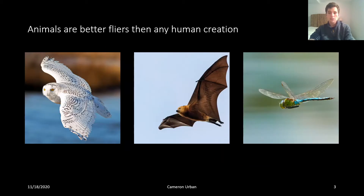This is because animals are better at flying than any human invention. This might sound like a controversial statement, so let me qualify it. While animals might not be able to fly as fast as a jet or carry as much weight as a cargo plane, they are able to fly with higher maneuverability, adaptability, and grace than any human contraption. Suffice to say, we have a lot to learn from the creatures that have been flying for hundreds of millions of years before the Wright brothers first took off in Kitty Hawk.